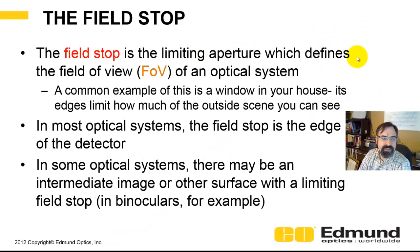Some concepts: the field stop is the aperture in the system that limits and controls the field of view. A common example is if you're standing in your house and you look out through a window at the outside world — that window is controlling the field of view. In most optical systems, it's the detector plane that's going to control your field of view, but there are cases where other surfaces may control it.